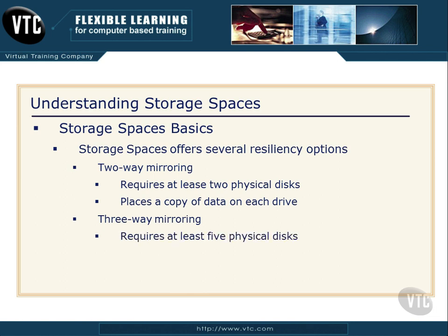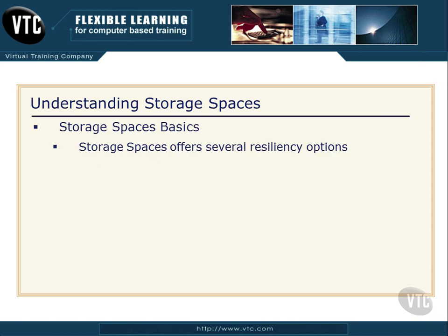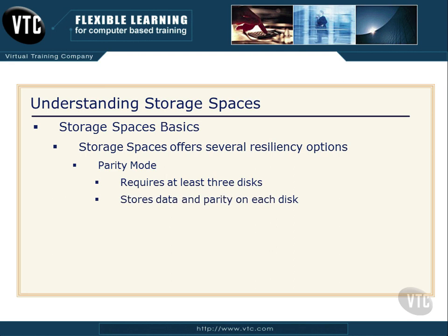With three-way mirroring, it requires at least five physical disks, and Storage Spaces will place a copy of data on three of the five disks. So if we lose a disk down the road, it can reconstruct the data. The last resiliency option is parity mode, which many of us know as RAID 5. This requires at least three disks, stores parity and data on each disk, and if we lose a disk, it reads parity from the other two disks to reconstruct what's missing.